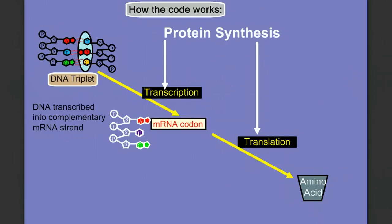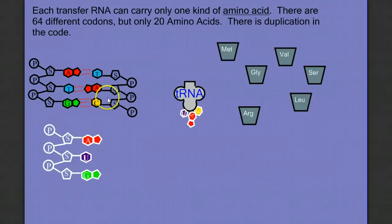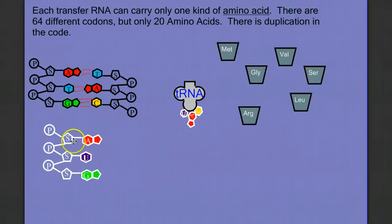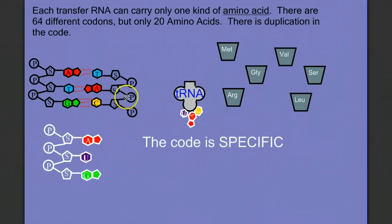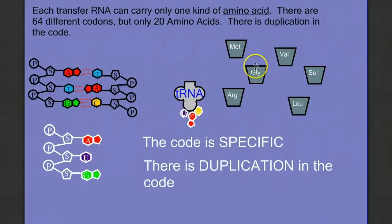There are 64 different ways to make a three-letter sequence of nucleotides in DNA — 64 different DNA triplets — which means there are 64 different mRNA codons and 64 different versions of transfer RNA possible in terms of genetic code. However, there are only 20 different amino acids. The code is specific, meaning that the sequence TAC can only ever code for methionine — it can never code for glycine, valine, serine, leucine, or any of the other 20 amino acids.